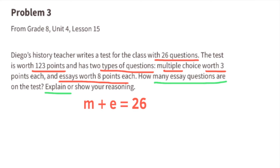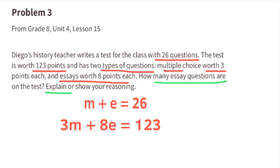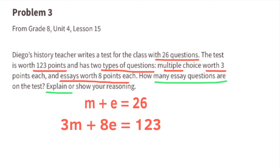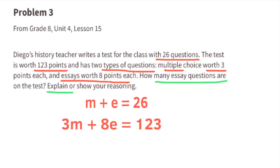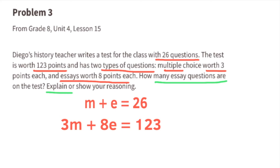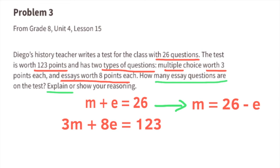Multiple choice plus essay equals 26. Since multiple choice questions are worth 3 points each, we can represent multiple choice as 3M. Essay questions are worth 8 points each, so we can represent essay questions as 8E. The whole test is worth 123 points. The 26 questions represent a total of 123 points, so the equation reads 3M plus 8E equals 123. Let's solve for M in this first equation. We can do that by subtracting E from both sides. M equals 26 minus E.